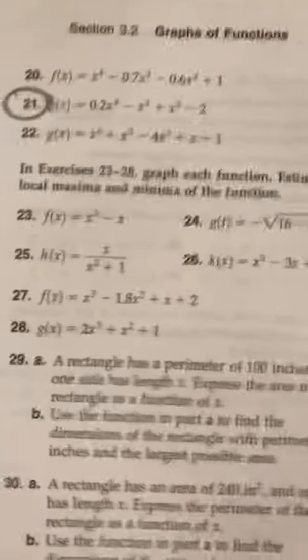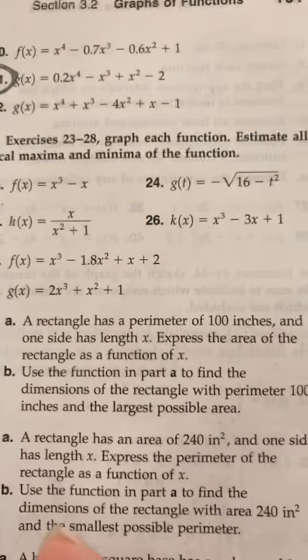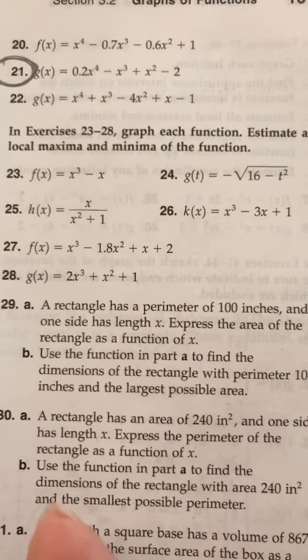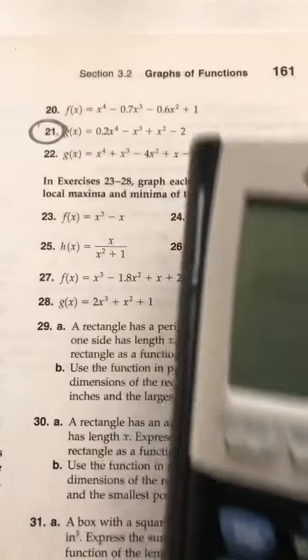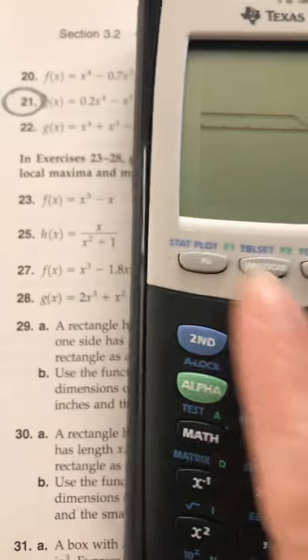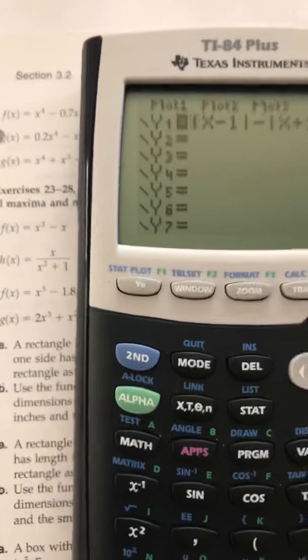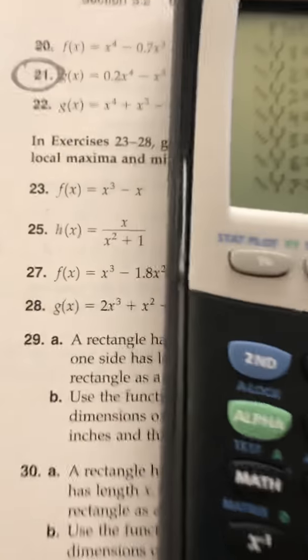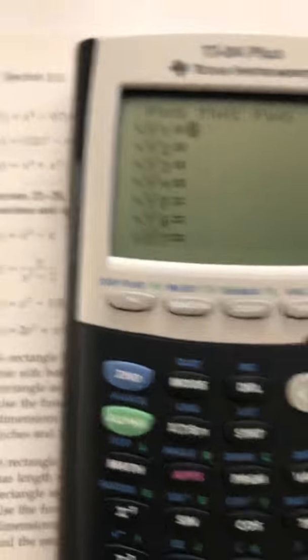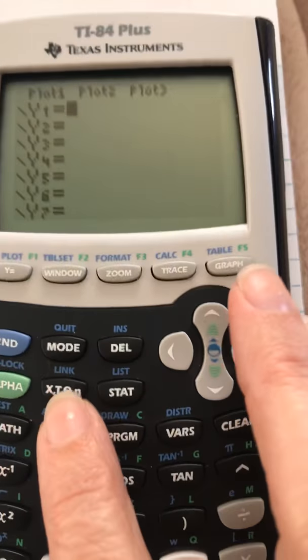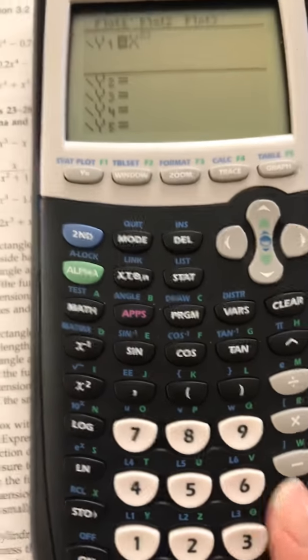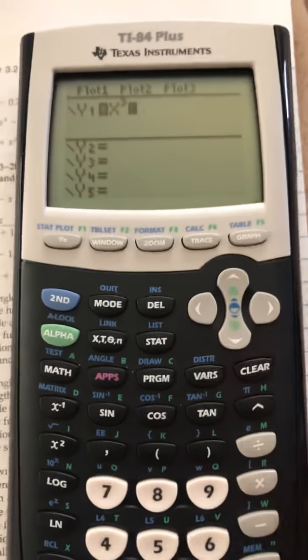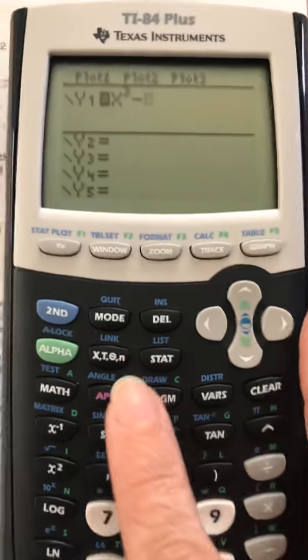Number 23 says graph each function. Estimate all the local maximums and minimums. Again I'm gonna get my calculator. Alright I'm going to go to y equals, clear out what I have. I'm going to put in x cubed minus x in y sub 1. x cubed minus x.